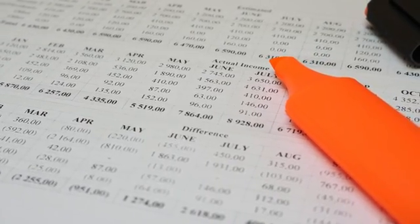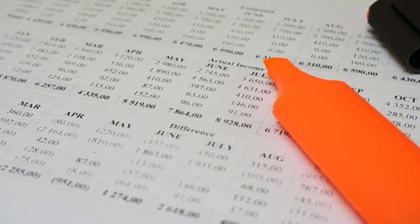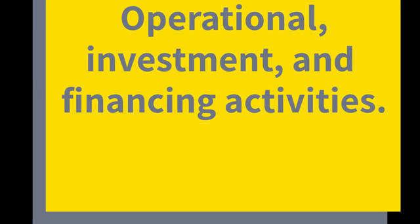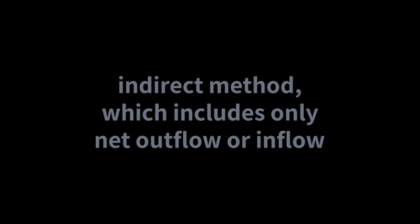The cash flow statement is primarily made up of three categories: operational, investment, and financing activities. One way of calculating cash flow is the direct method, which involves listing all the inflow and outflow of cash. The other way is the indirect method, which includes only net outflow or inflow.